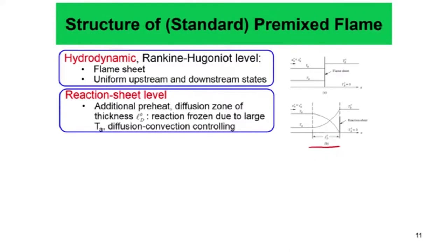The reaction zone is narrow because the activation energy is very large. That is why the reaction zone is narrow, justifying the assumption of the reaction zone being considered as a reaction sheet. We consider the temperature increase happening over a finite region. This part — the preheat zone — essentially has no reaction because it is diffusion and convection controlling.